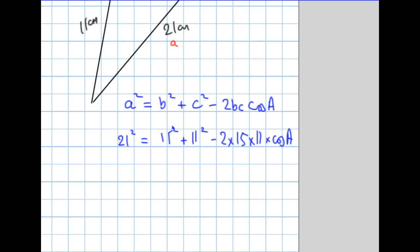Now I won't work out anything yet. I'm going to move these terms across to try and make cosine A the subject. So it's 21 squared take away 15 squared take away 11 squared. It's minus 330 cosine A. And now if I divide both sides by minus 330, I get 21 squared take away 15 squared take away 11 squared all over minus 330 equals cosine of A.